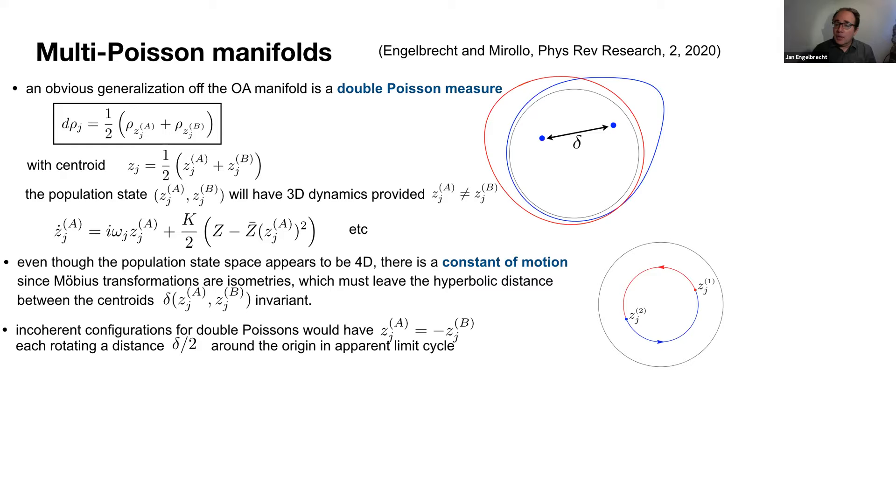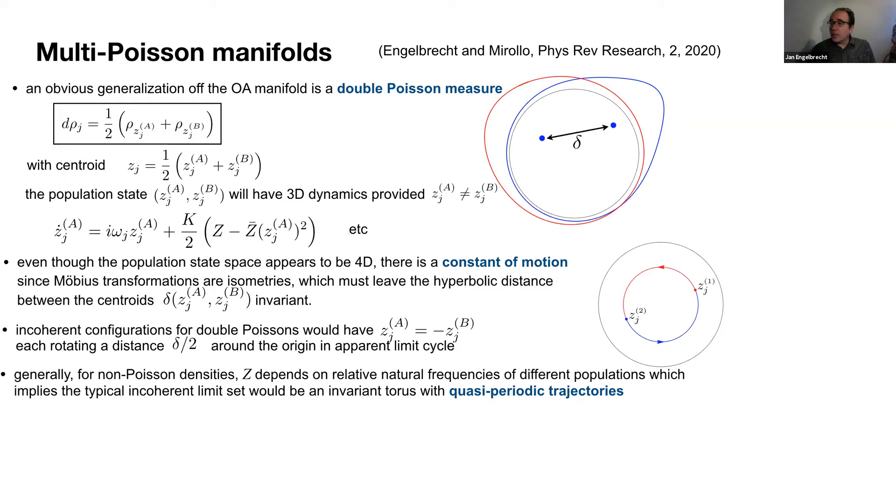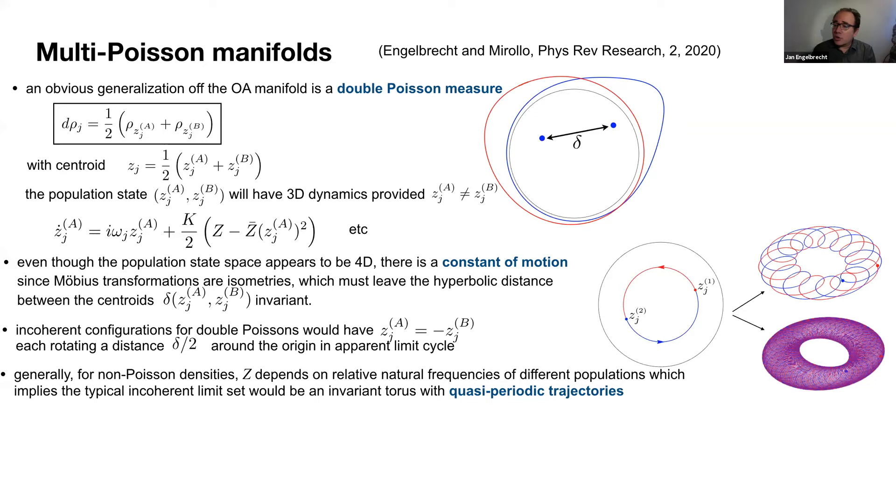I should point out that the property of the decoupling of this third dimension is a property of Poisson density. If we have non-Poisson densities, then this third dimension, in this case represented by the motion of the marked oscillator, will couple to the order parameter and therefore to the centroid dynamics. So you can imagine taking this limit cycle and extending it in the third periodic dimension. The general space of the forward limit set would be the surface of an invariant kind of torus with quasi-periodic orbits.